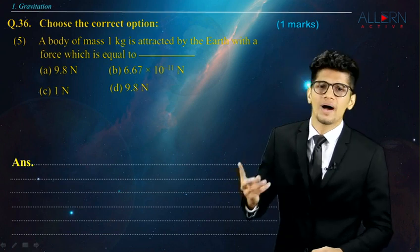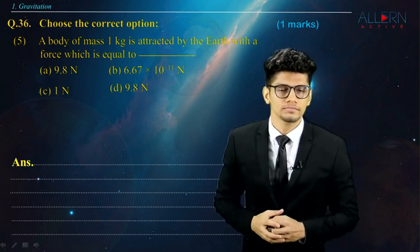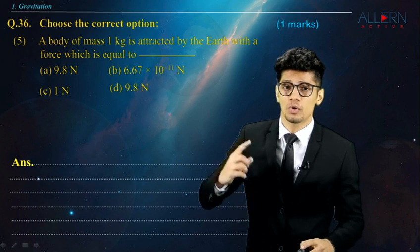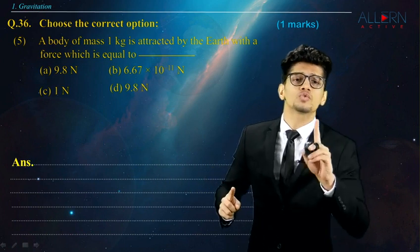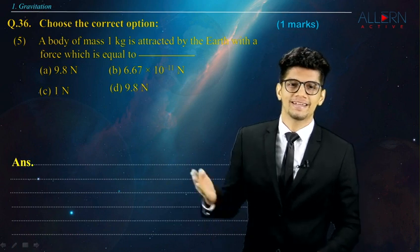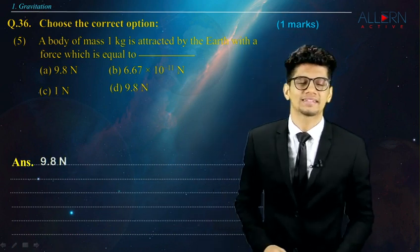Next question. A body of mass 1 kg is attracted by the earth by a force which is equal to. Now, f is equal to m into g. m is 1. Small g is approximately 9.8. So, 9.8 into 1 becomes 9.8. So, correct answer is 9.8 Newton. As simple as that.